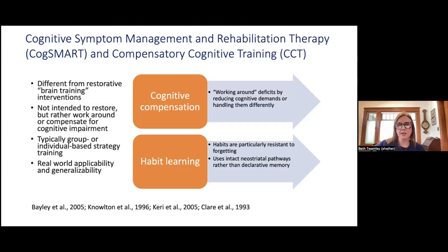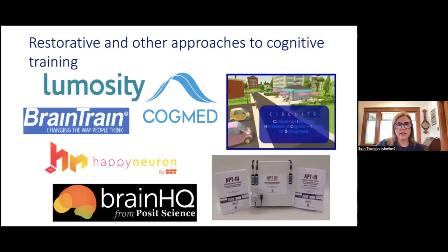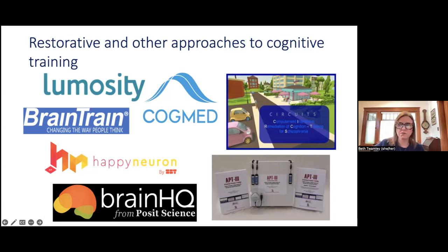I'm more a proponent of the compensatory approach. We use cognitive compensation in all of the interventions, and another really important piece is habit learning — habits are particularly resistant to forgetting. Anyone who brushed their teeth or had a cup of coffee this morning knows that. Habits use neostriatal pathways instead of traditional declarative memory pathways in the brain, and those tend to be more intact for many neuropsychiatric groups. Some examples of restorative approaches include Lumosity, heavily advertised on NPR, and Brain HQ from Posit Science, which has the most research evidence, as well as Circuits for schizophrenia.